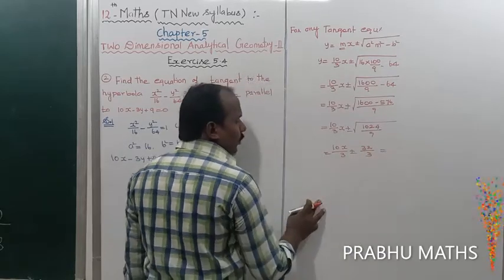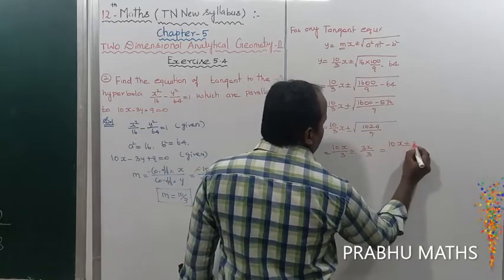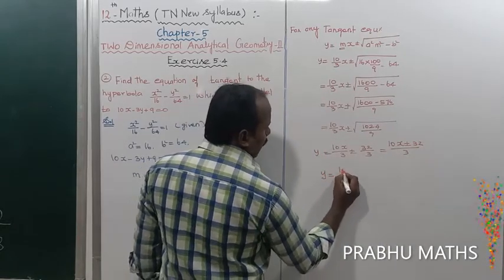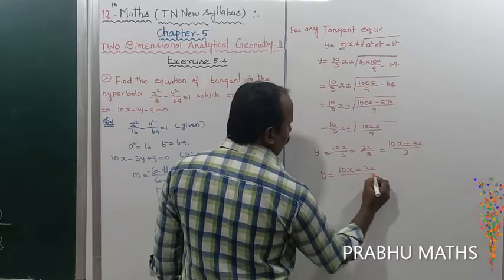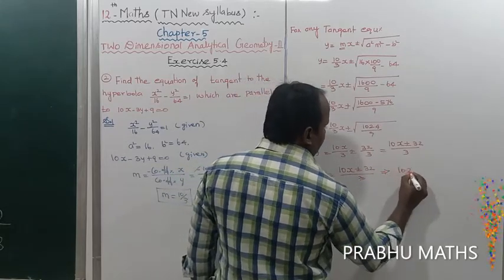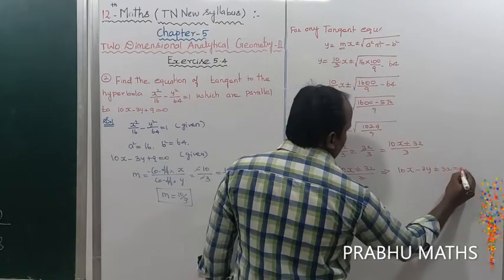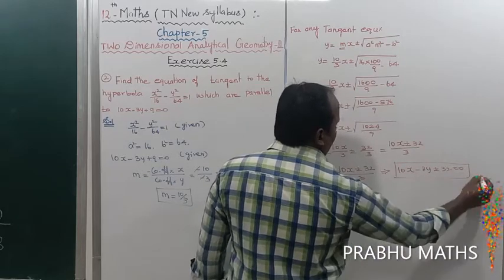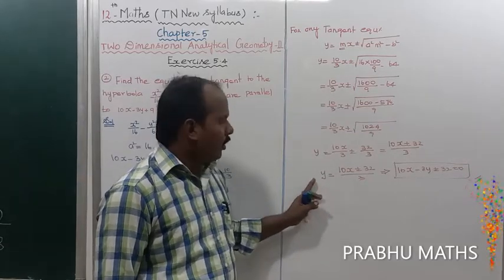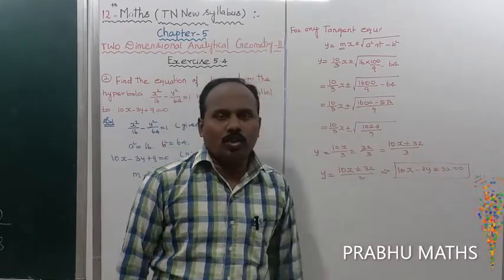The denominators are the same, so combining: y = (10x ± 32) / 3. Cross-multiplying: 3y = 10x ± 32, which gives 10x minus 3y ± 32 = 0. That is the equation of the tangent to the hyperbola.